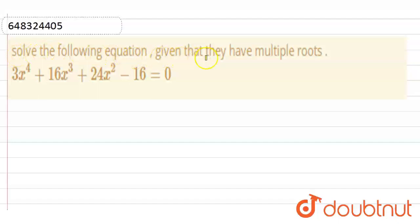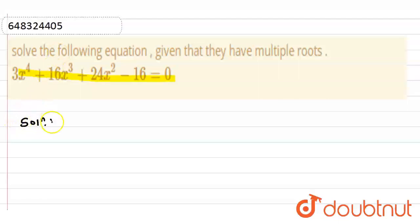Solve the following equation given that it has multiple roots: 3x⁴ + 16x³ + 24x² - 16 = 0.